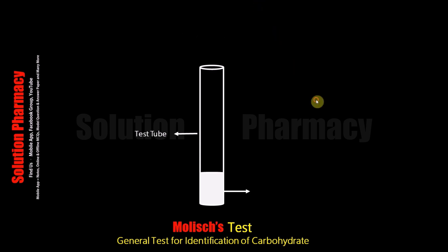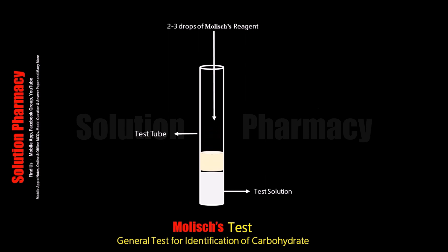After transferring 2 ml of the test solution to the test tube, add 2 to 3 drops of Molisch reagent. Molisch reagent is the solution of alpha-naphthol in alcohol — about 10% alcoholic solution of alpha-naphthol is prepared, and this solution is called Molisch reagent.